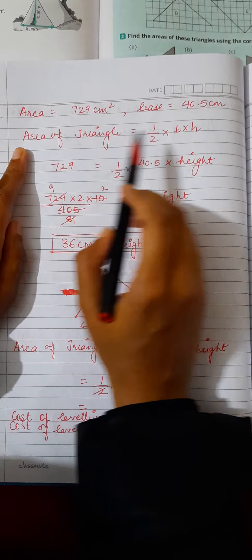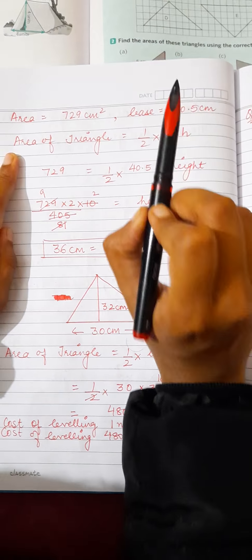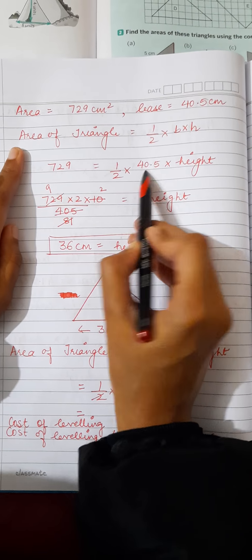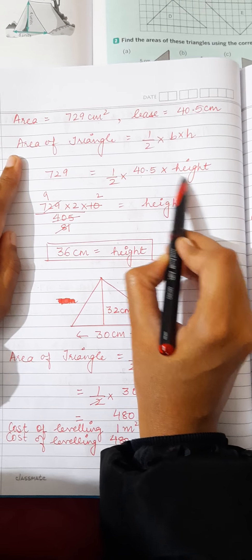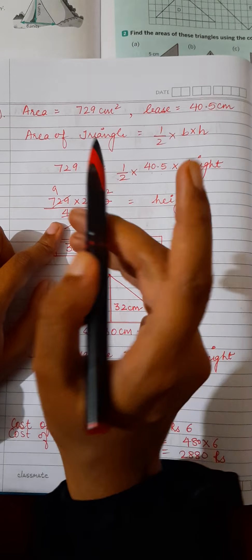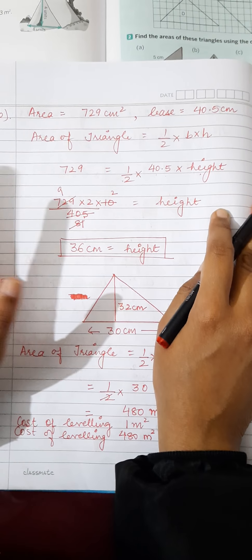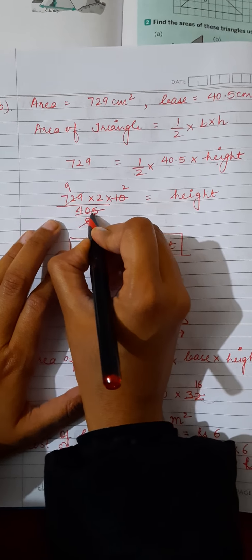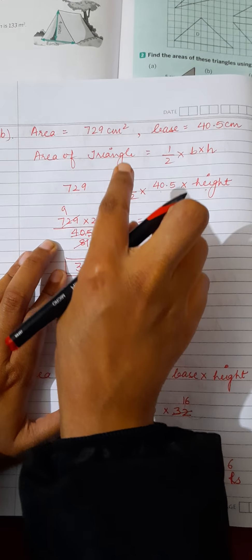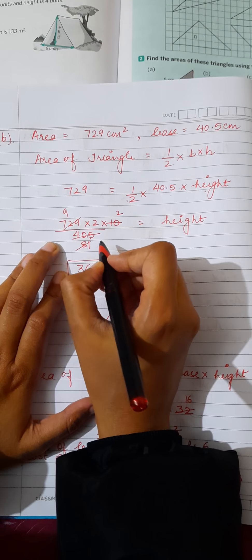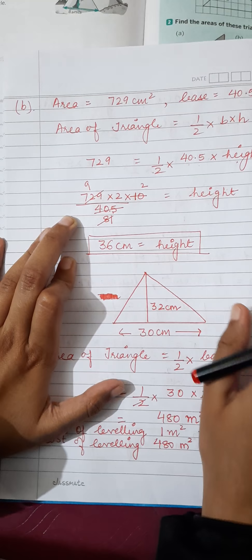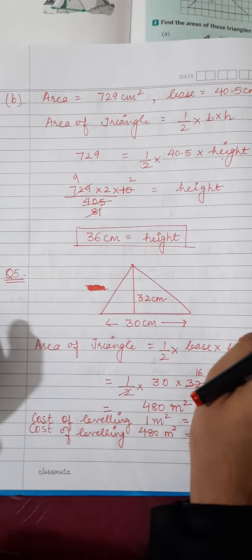Part B: area is 729 centimeters square, base is 40.5, find the height. Area = half × base × height: 729 = half × 40.5 × height. Rearranging: height = (2 × 729) / 40.5. Since there is a decimal in the denominator, multiply numerator and denominator by 10, cancel, and the height is 36 centimeters.